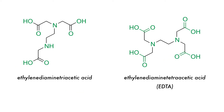Polydentate ligands, such as ethylenediamine triacetic acid and ethylenediamine tetraacetic acid (EDTA), can form multiple bonds to the central metal, forming five and six dative covalent bonds, respectively.